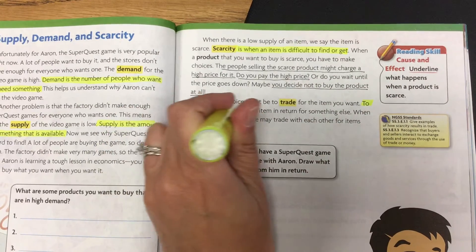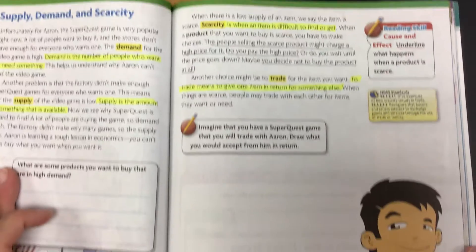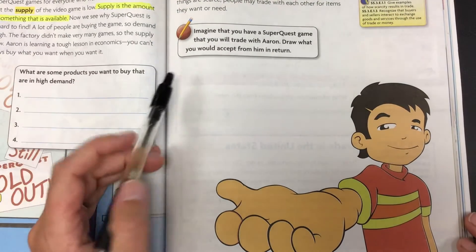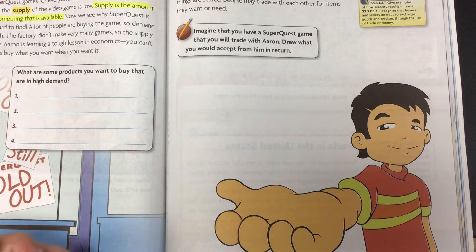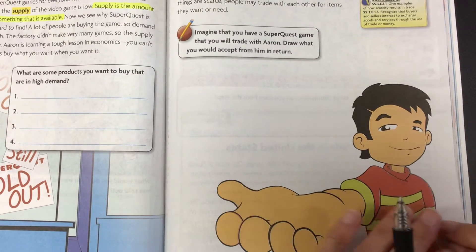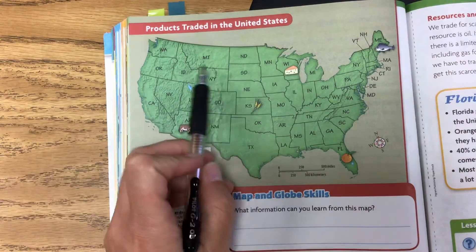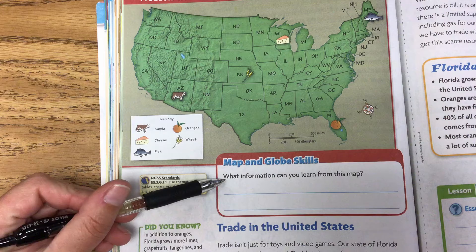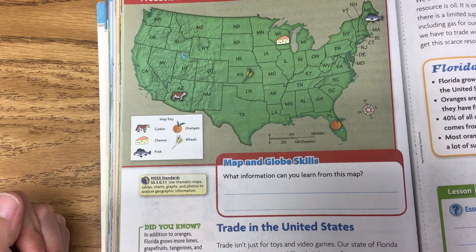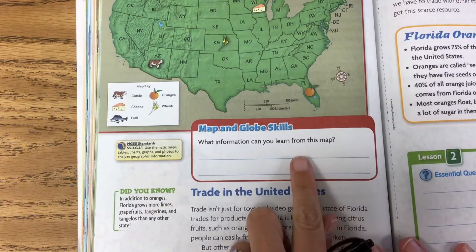Let's highlight that definition of trade. When things are scarce, people may trade with each other for items they want or need. Here it says, imagine that you have a SuperQuest game that you will trade with Aaron — draw what you would accept from him in return. Take a look at this map up here: Products Traded in the United States. Think about what information you can learn from this map and how we can look at the key to give us more information. Go ahead and complete that box.